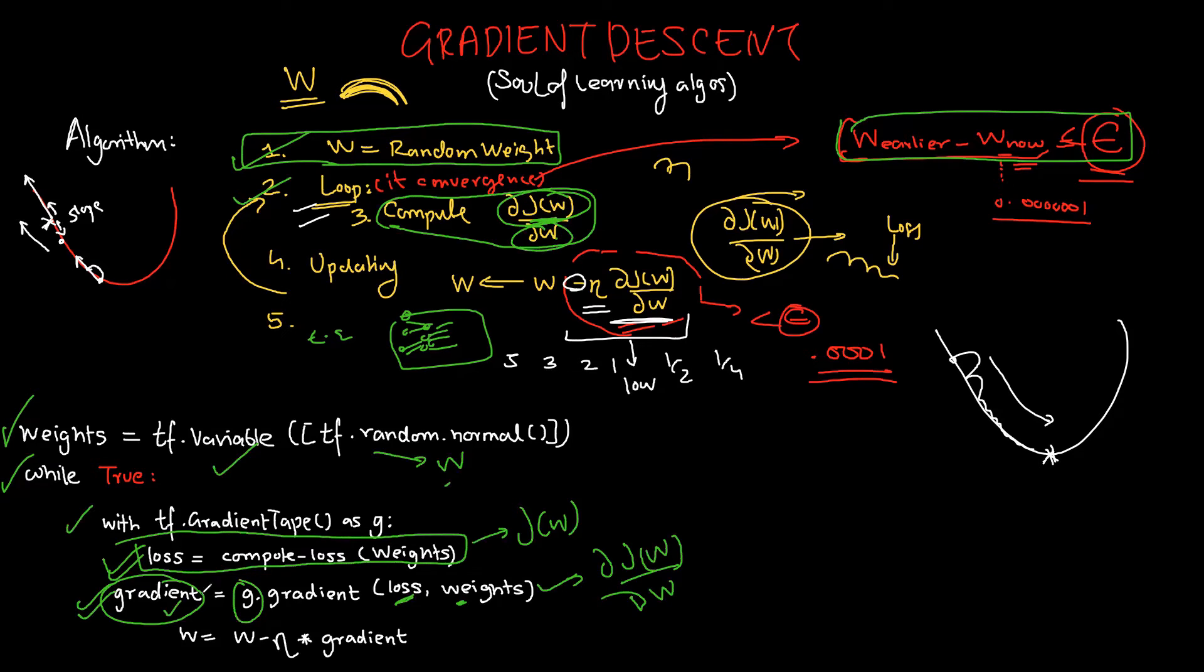After that, my weights will be updated as weight is now weight minus this is my learning step times gradient, which is this particular value. This is how the code works.